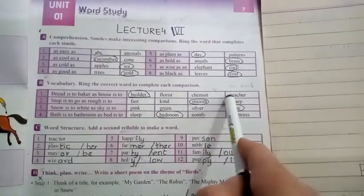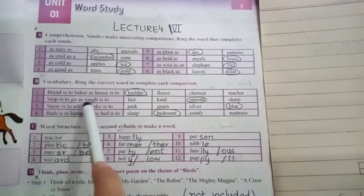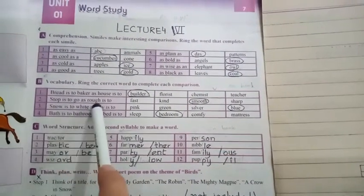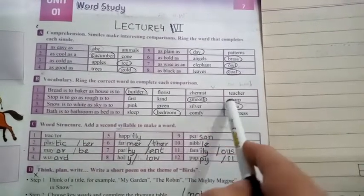So who makes the house for you? Builder, florist, chemist, teacher. Builder, so you will encircle it. Stop is to go as rough is to. Now these are opposite words. Stop is to go as rough is to: fast, kind, smooth, or sharp. Smooth.